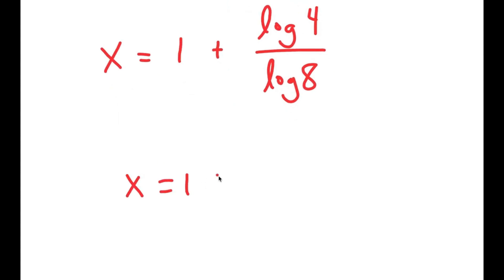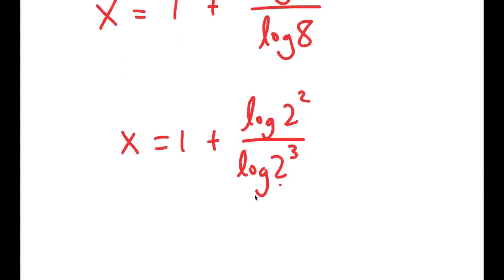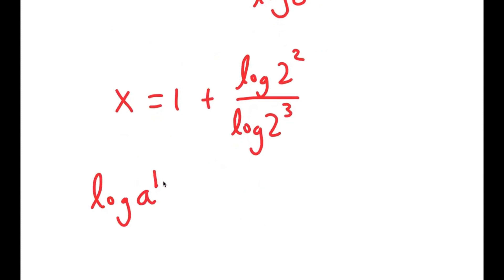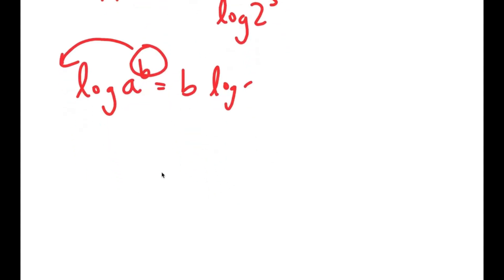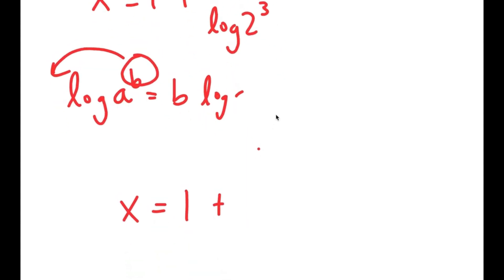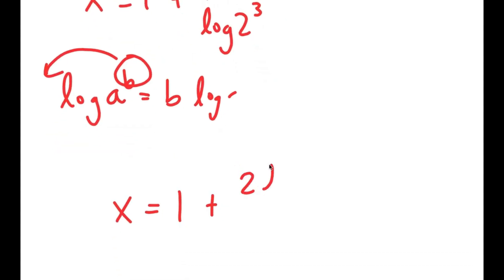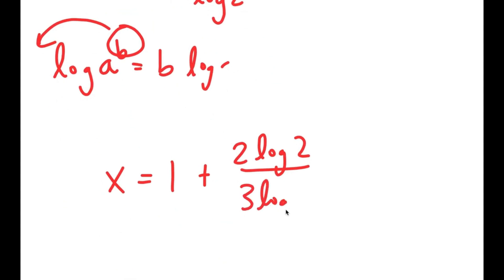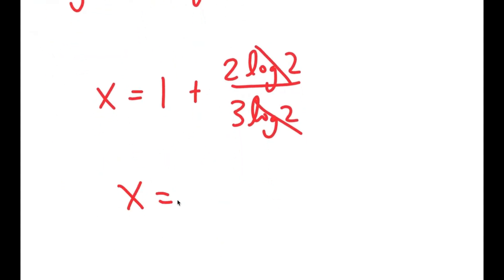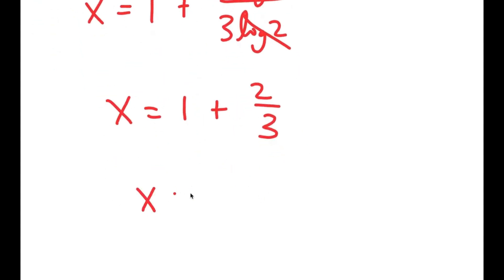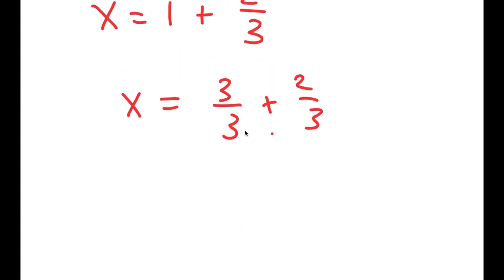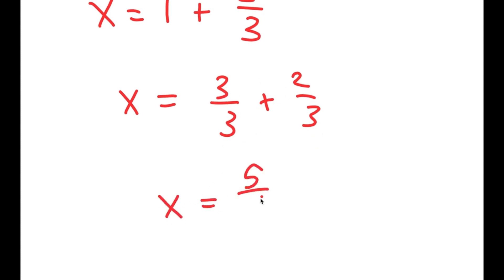Now log of 4 is the same as log of 2 squared, and log of 8 is the same as log of 2 to the power of 3. Using the power rule to move the exponents to the front, I get x is equal to 1 plus 2 times log 2 over 3 times log 2. The log 2 terms cancel out, giving x equals 1 plus 2 over 3, which equals 3 over 3 plus 2 over 3, which is 5 over 3.